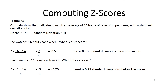Let's take these formulas and put them into examples. Our data show that individuals watch an average of 14 hours of television per week with a standard deviation of 4. The mean is 14, standard deviation is 4. Our first individual is Joe. Joe watches 16 hours each week. His raw score was 16, so we know he was above the mean — 2 hours above the mean.